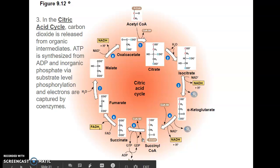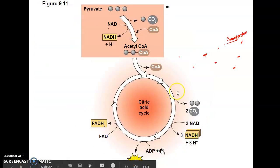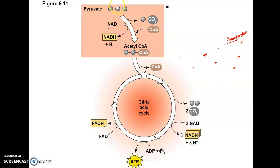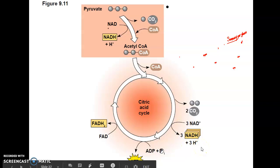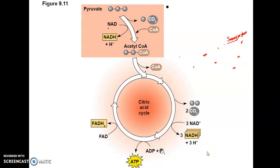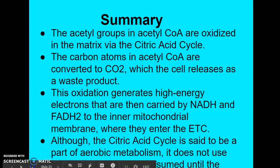Those high-energy electrons will go on to oxidative phosphorylation. Starting with pyruvate, we oxidize it to acetyl-CoA. The two molecules from pyruvate oxidation enter the citric acid cycle, and in the process we release four carbon dioxides as waste, generate six NADHs, two ATPs, and two FADH2s as energy. All of those energy products — minus the carbon dioxide — feed into oxidative phosphorylation, or in other words, the electron transport chain.